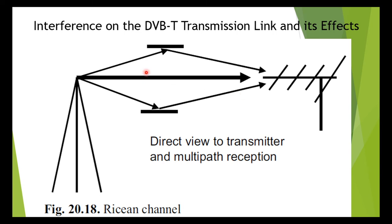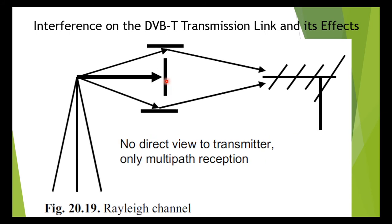If the direct line of sight to the transmitter — that is, the direct channel path — is also blocked, the channel is called the Rayleigh channel, as shown in figure 19. This represents the worst conditions of stationary reception.